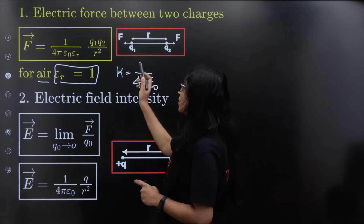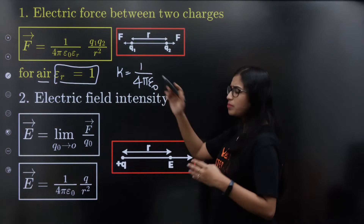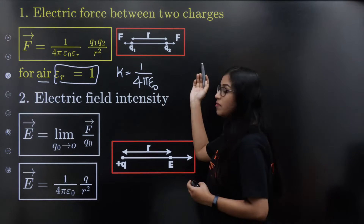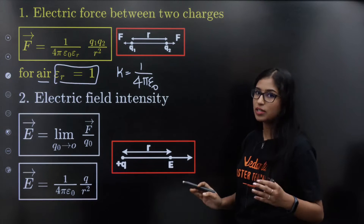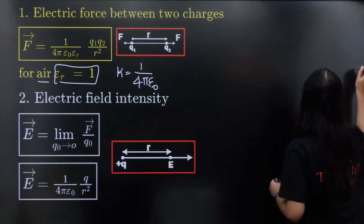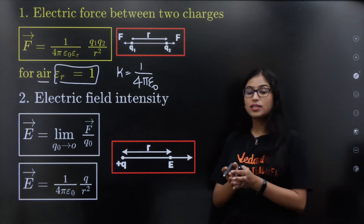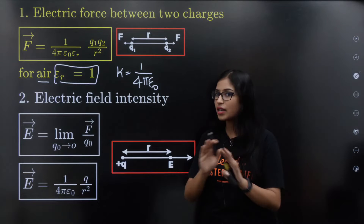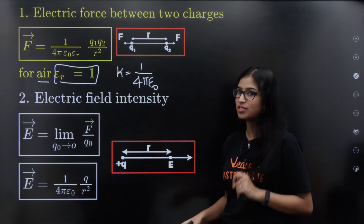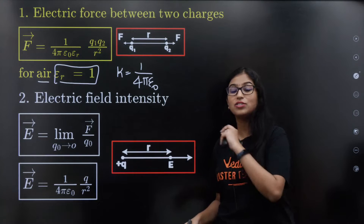So Q1Q2 divided by R squared. For Coulombian force, we need to handle attraction and repulsion. For the direction of charges, you should pick the directions: i-cap, j-cap, minus i-cap, minus j-cap.